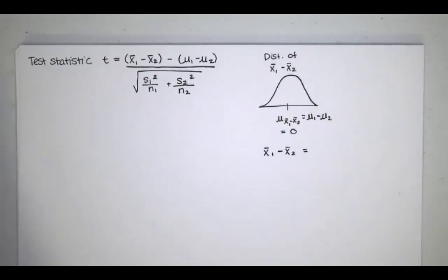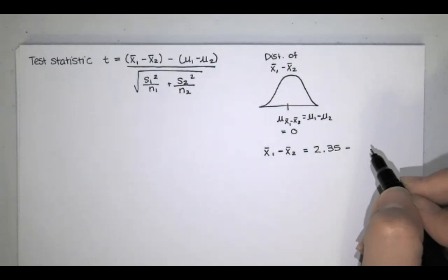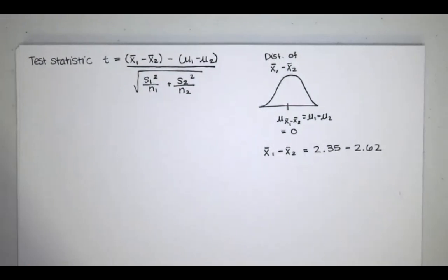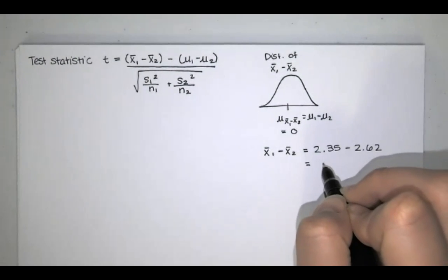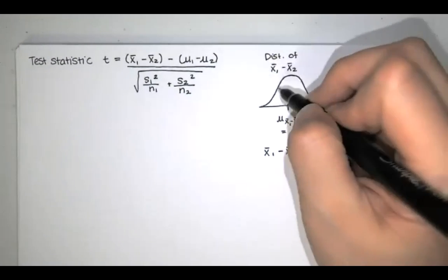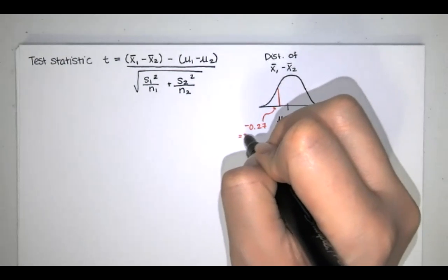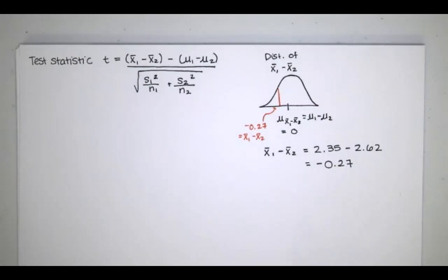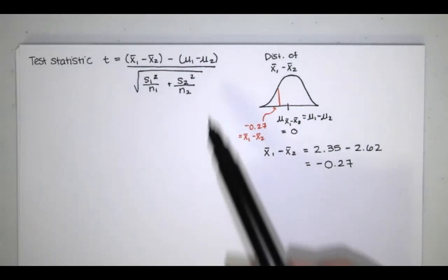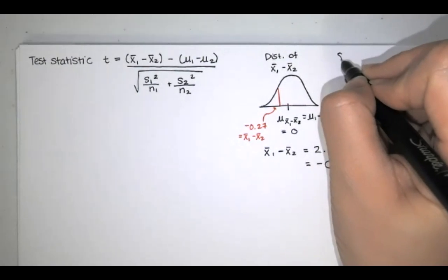We're assuming that the null hypothesis is true, so we're assuming that mean is zero — mu sub 1 equals mu sub 2. We're asking ourselves whether the value of x sub 1 bar minus x sub 2 bar for our particular samples is significantly high or significantly low. x sub 1 bar was 2.35 and x sub 2 bar was 2.62, giving us negative 0.27. Is this difference of negative 0.27 significantly low given that the null hypothesis is true? We compute this test statistic t by converting to a student t distribution.